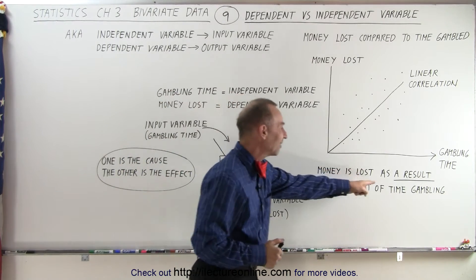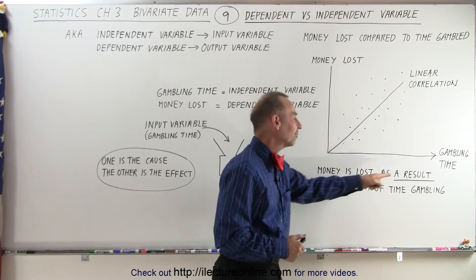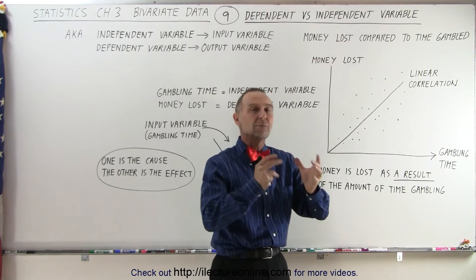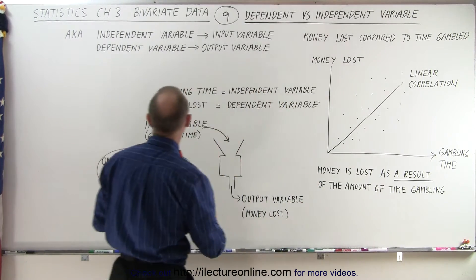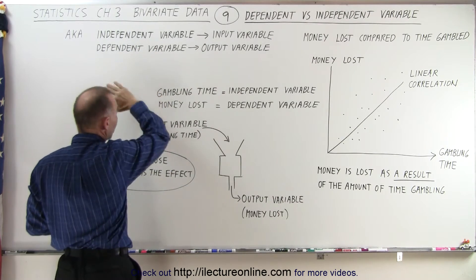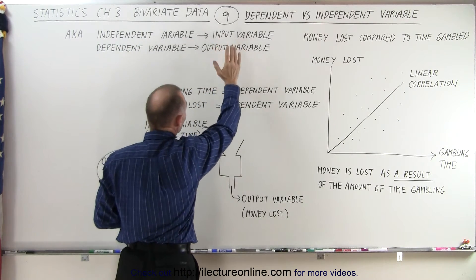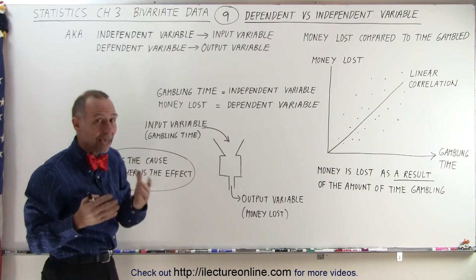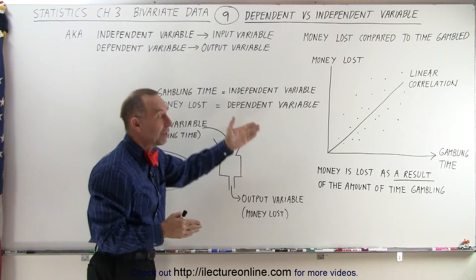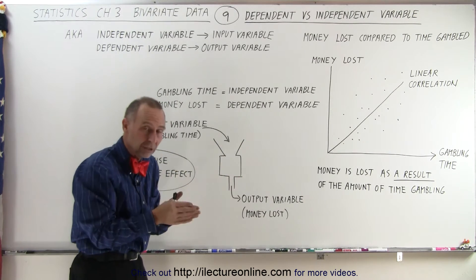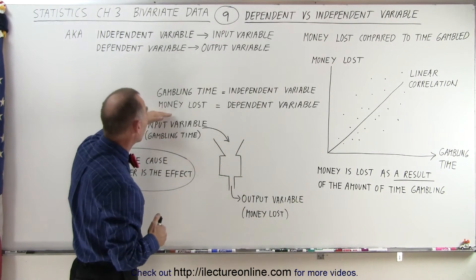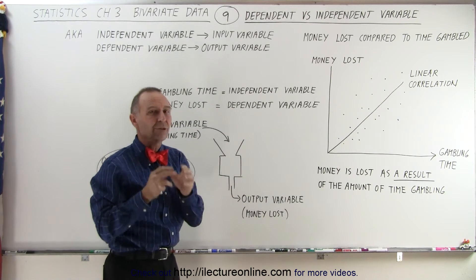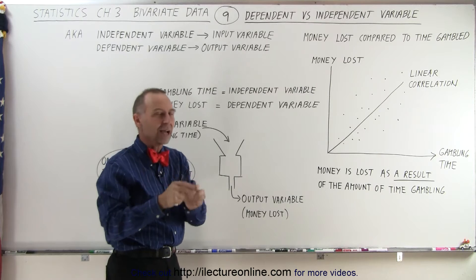Money is lost as a result of the amount of time gambling, so the amount of time gambling controls the amount of money being lost. Looking at independent versus dependent variables — also called input and output variables — the gambling time can be considered the independent variable. We can change how much time we gamble, and as a result, the amount of money lost is the dependent variable, a direct result of the time gambled.